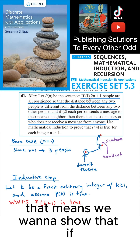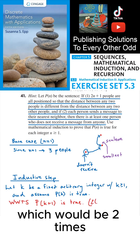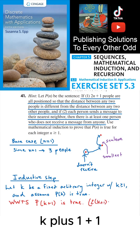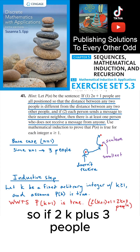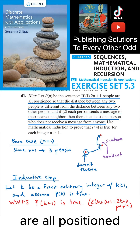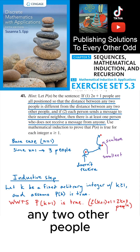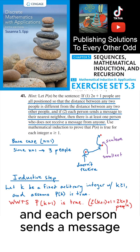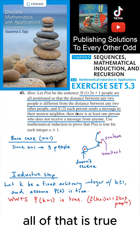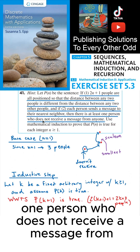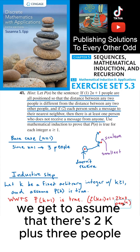We want to show that if 2(k+1)+1 = 2k+3 people are all positioned so that the distance between any two people is different from the distance between any two other people, and each person sends a message to their nearest neighbor, then there is at least one person who does not receive a message from anyone. So we get to assume that there are 2k+3 people.